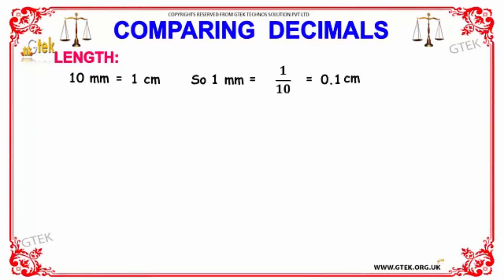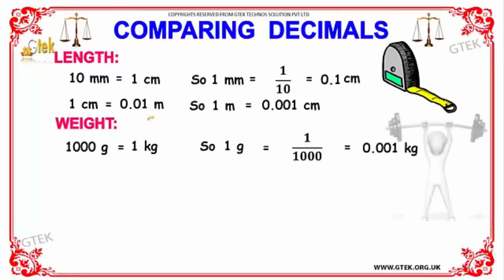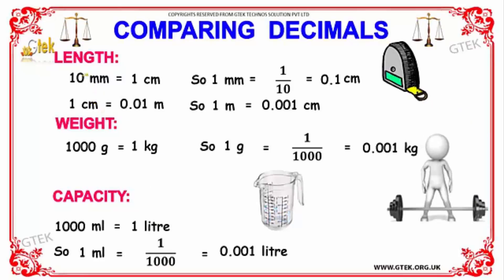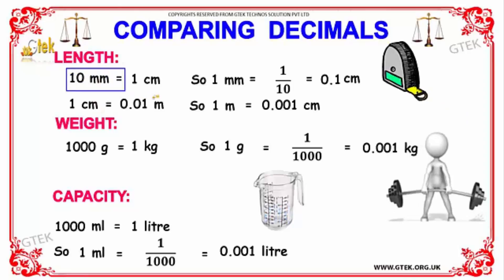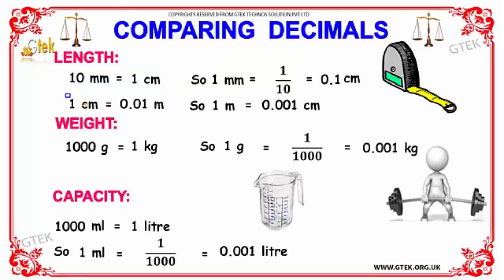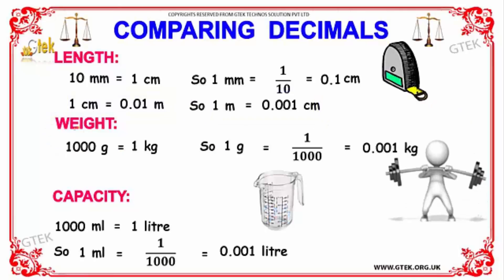In terms of length: 10 millimeters equals 1 centimeter, so 1 millimeter equals 1/10, that is 0.1 centimeters. Also, 1 centimeter equals 0.01 meter.